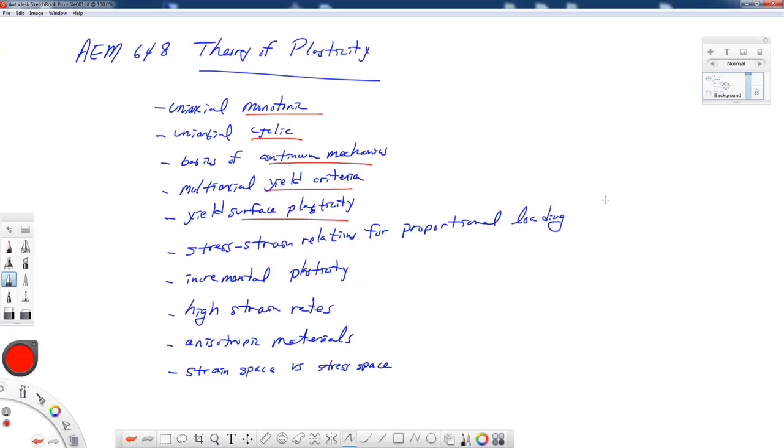Just as an aside, proportional loading would be if we have something like sigma and tau, that they are proportional to one another throughout their loading history. And in incremental plasticity, we could deal with other types of loading paths where they have non-proportional loading. So maybe we change them proportionally at first, but we hold one constant and we vary the other and so forth.